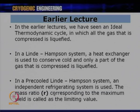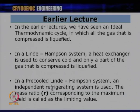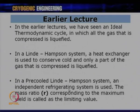Then we went for the second modification, which is the pre-cooled Linde-Hampson system, where an independent refrigerating system is used to pre-cool the gas before it enters the heat exchanger. The mass ratio of the refrigerant cycle corresponding to maximum yield is called the limiting value, meaning one cannot go on increasing the refrigerant flow in the auxiliary cycle beyond a particular R value without any significant effect on the yield.